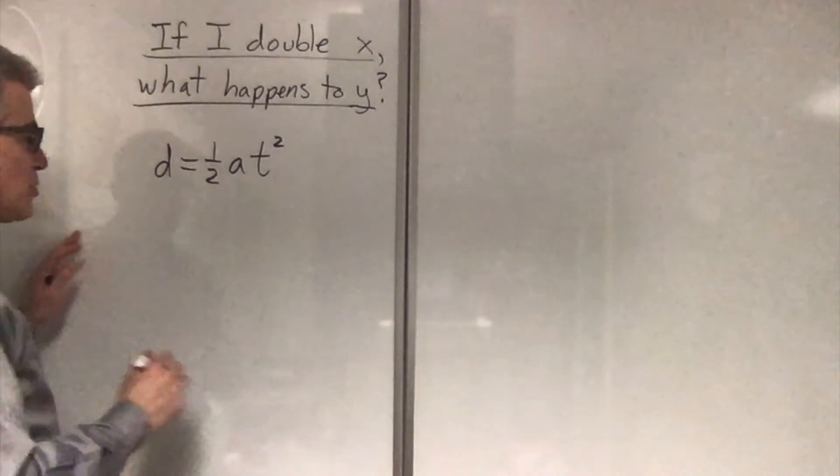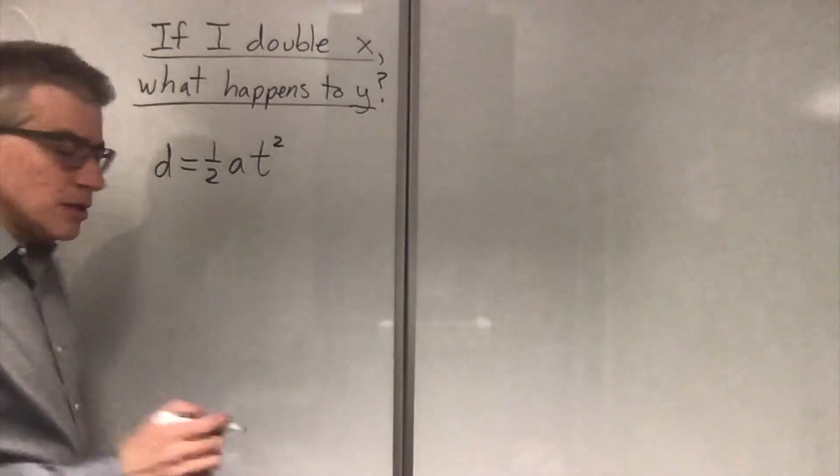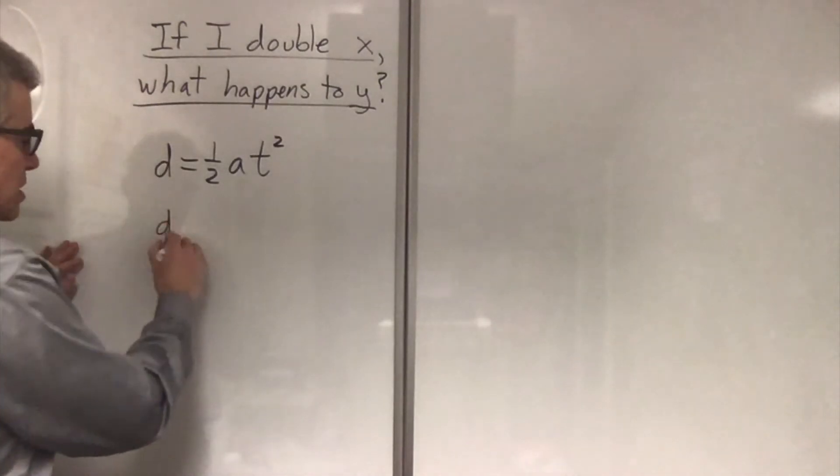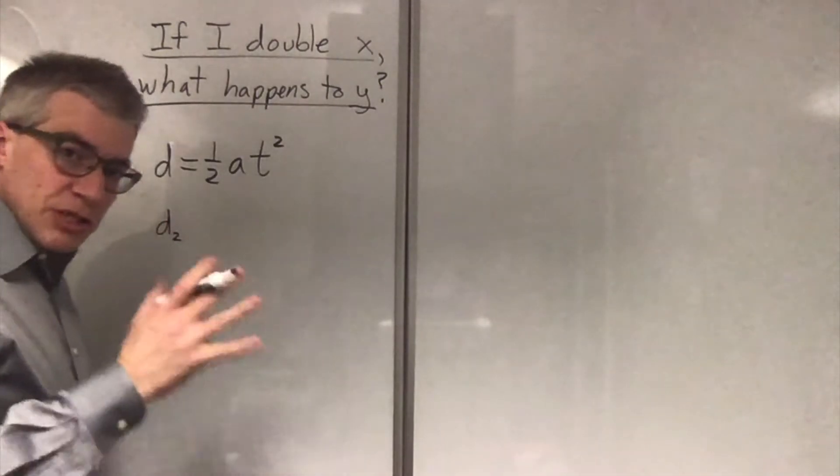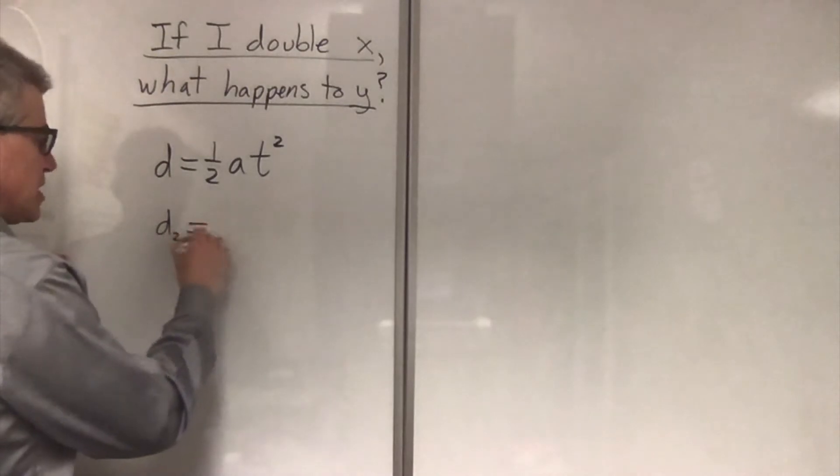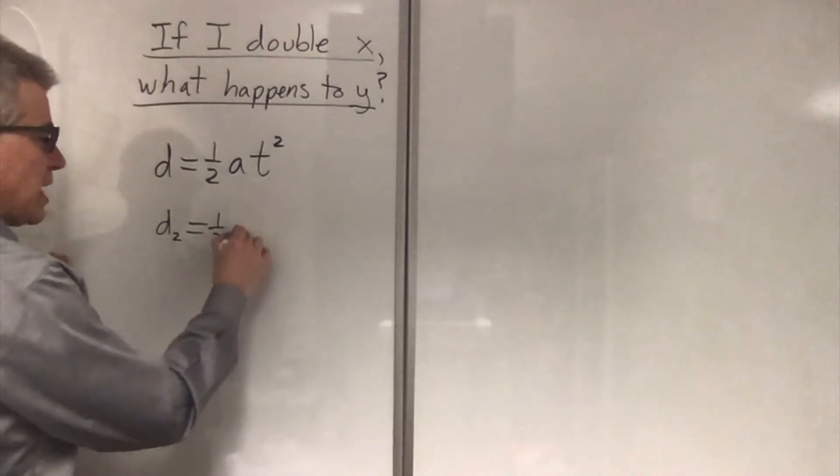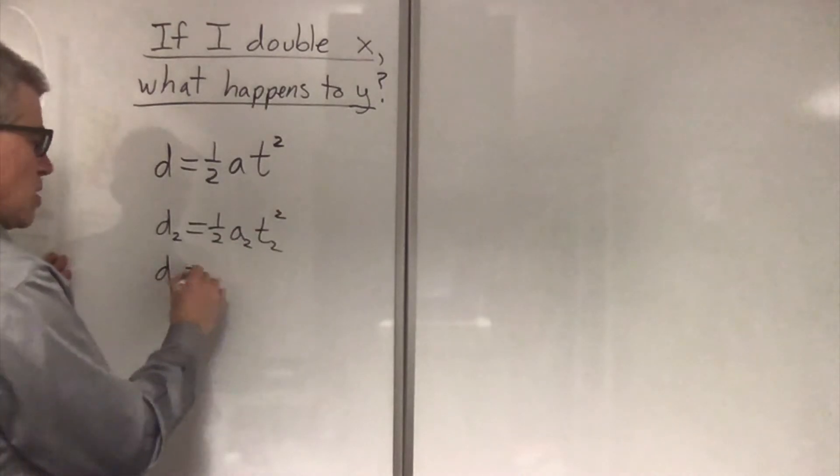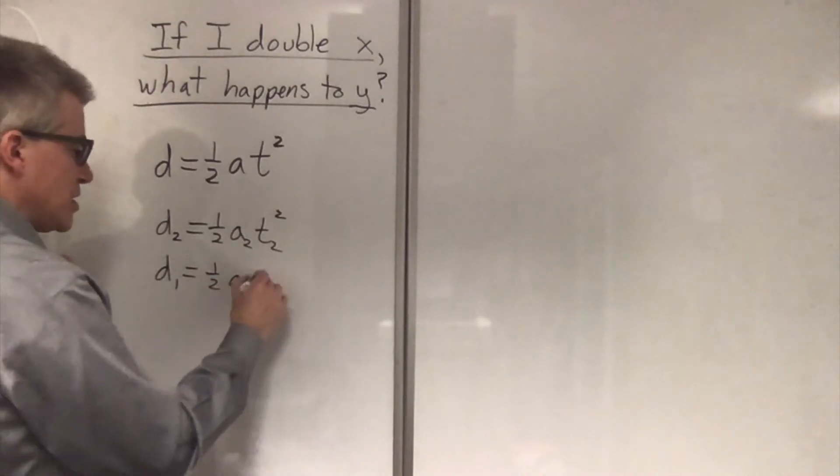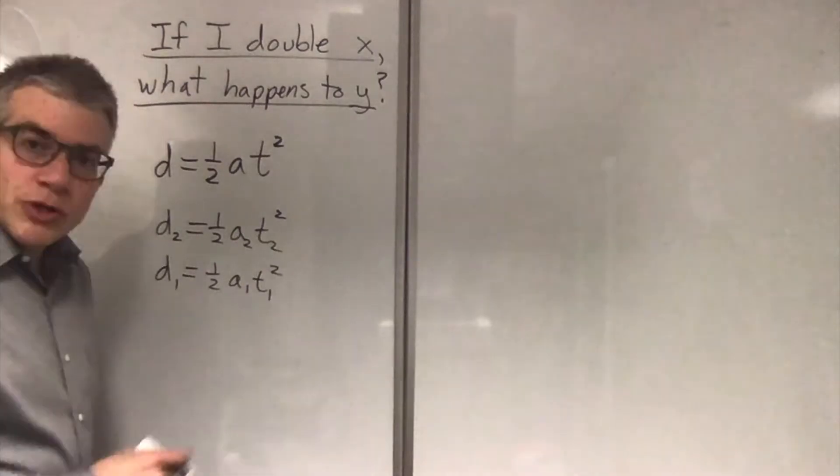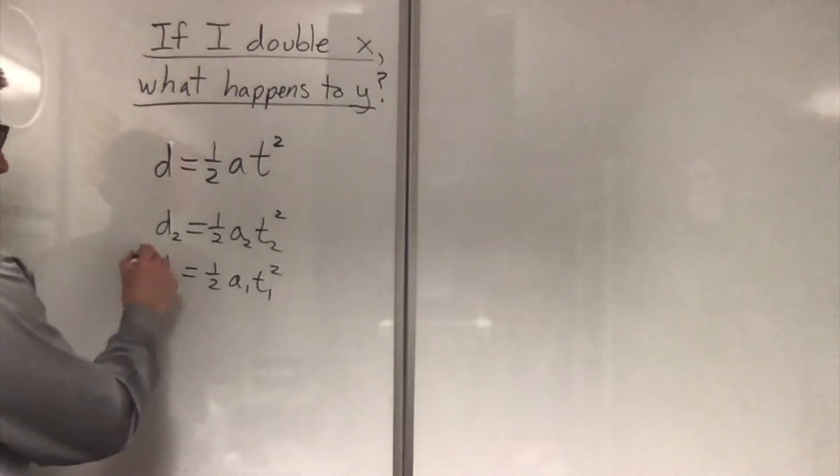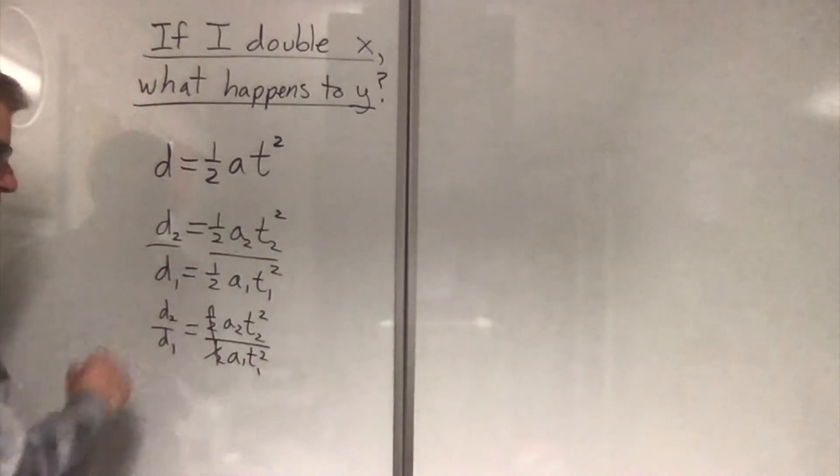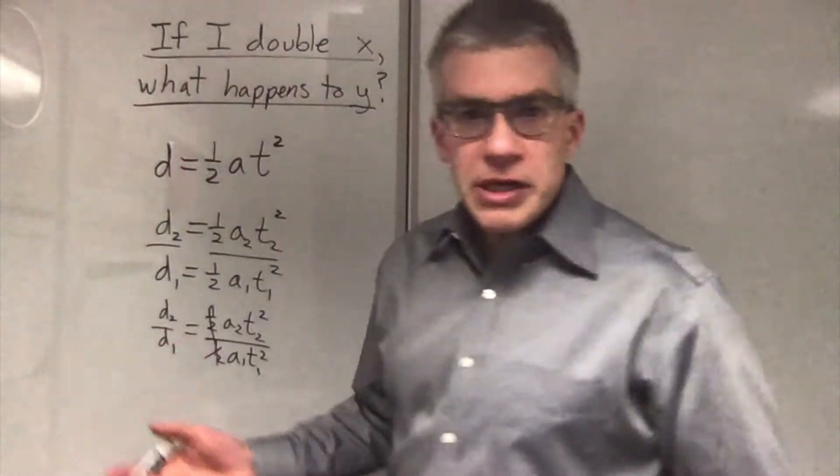One way to tackle these problems is to write the same formula twice, if you're uncertain how it works. This is a bit long, but it gets the job done while you're first learning. Distance 2 is one-half acceleration 2 time 2 squared. Distance 1 is one-half acceleration 1 time 1 squared. Well, you can actually divide their corresponding sides. The one-halfs cancel. So now we have everything written in a proportion.